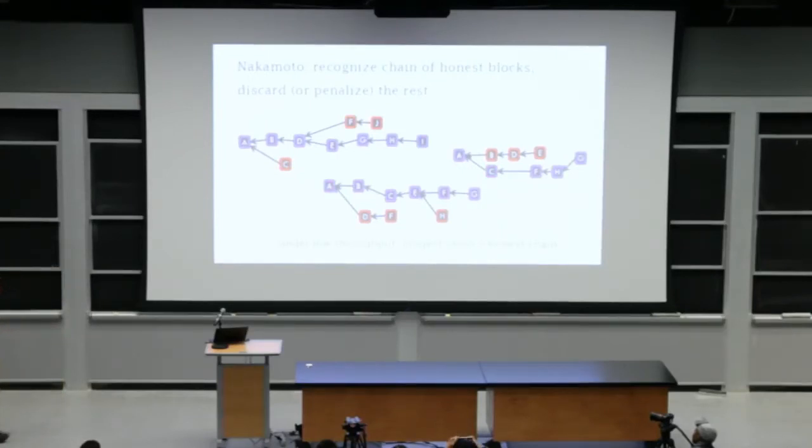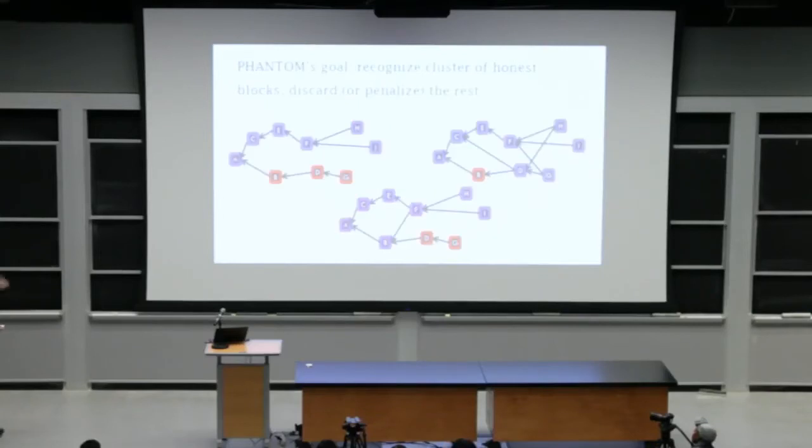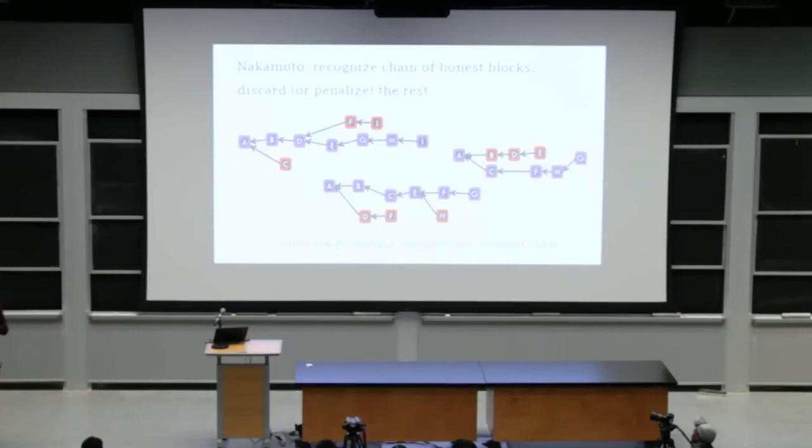Yeah. So before we get to the rule, observe that this agenda of recognizing who is an attacker, who is an honest block is merely a generalization of Satoshi's paradigm. So what Satoshi did is he looked at a tree of chains. There's many forks, right? Or not many. There are forks in the network. And Satoshi said, if you want to recognize the honest set of blocks, you should choose to select the longest chain. So the rule of thumb of Satoshi is longest chain equals honest chain.